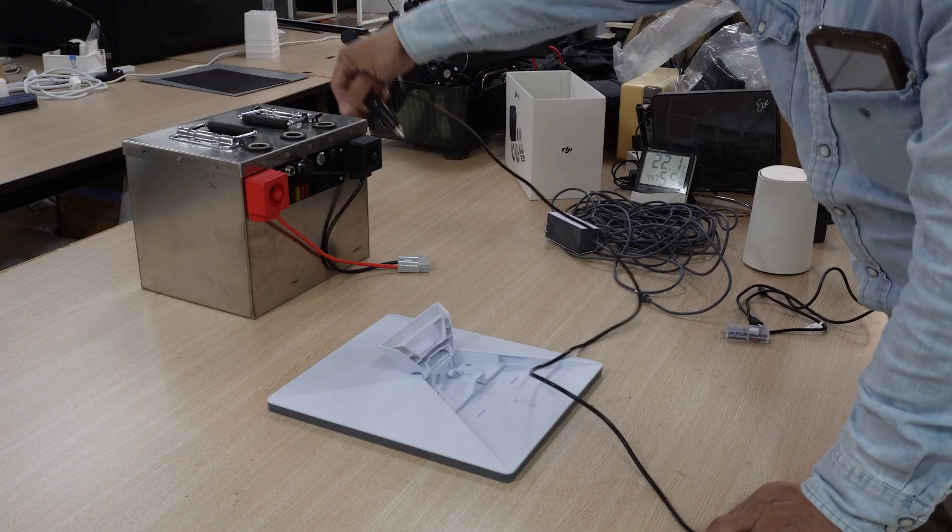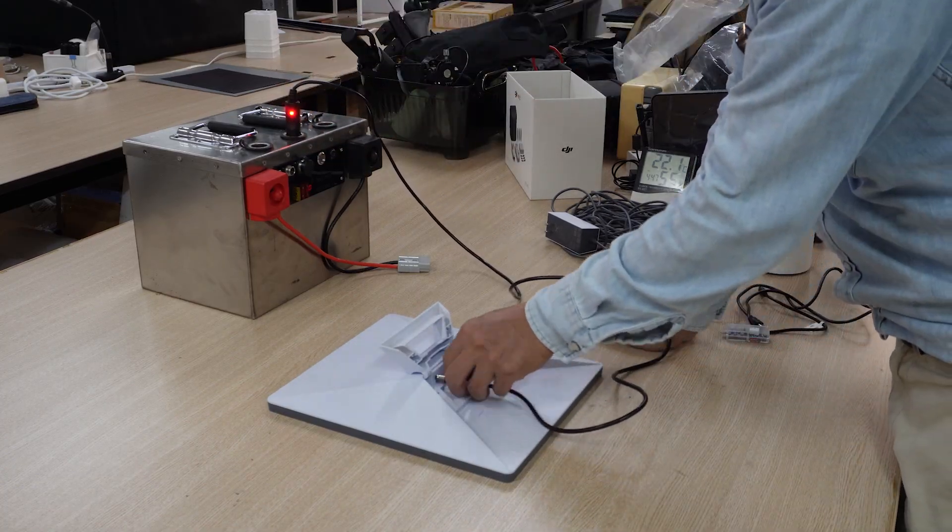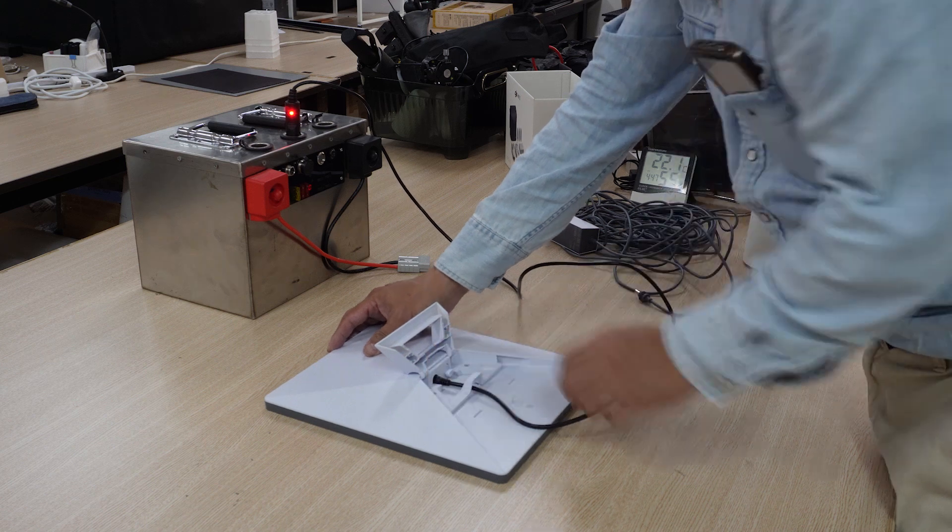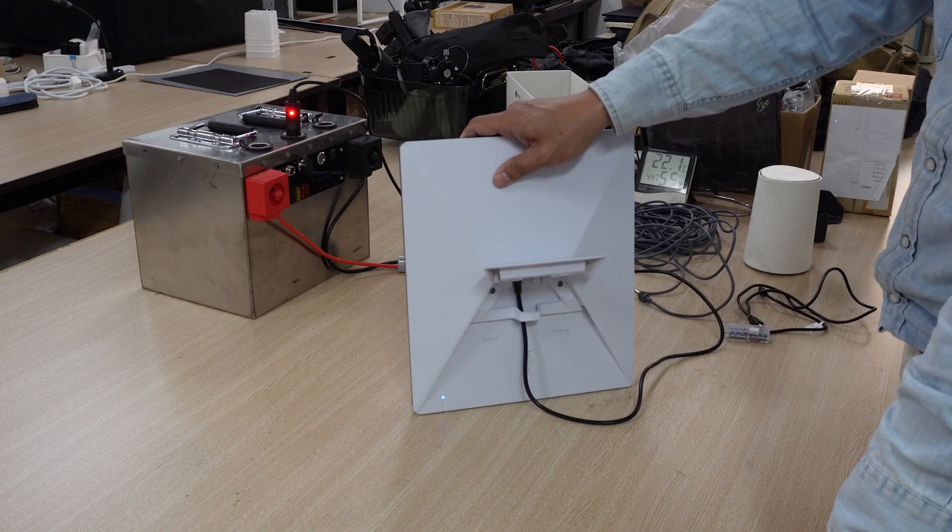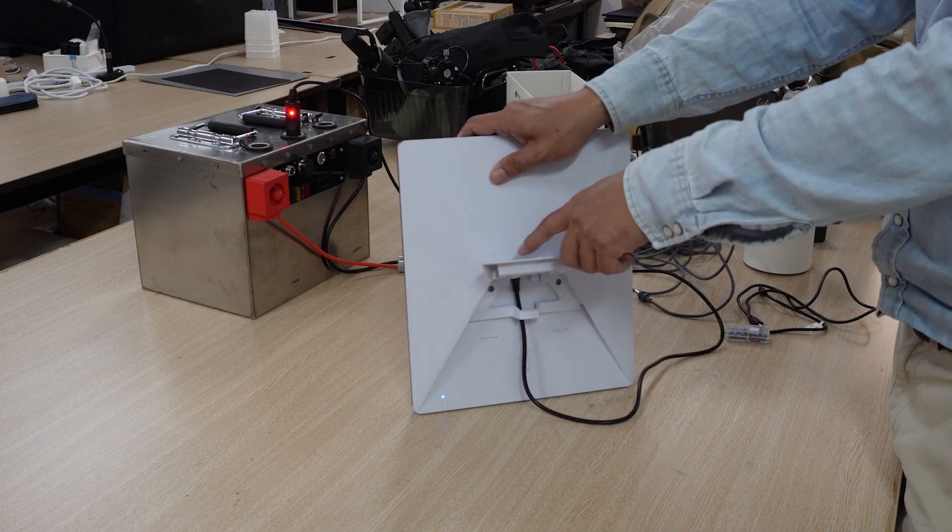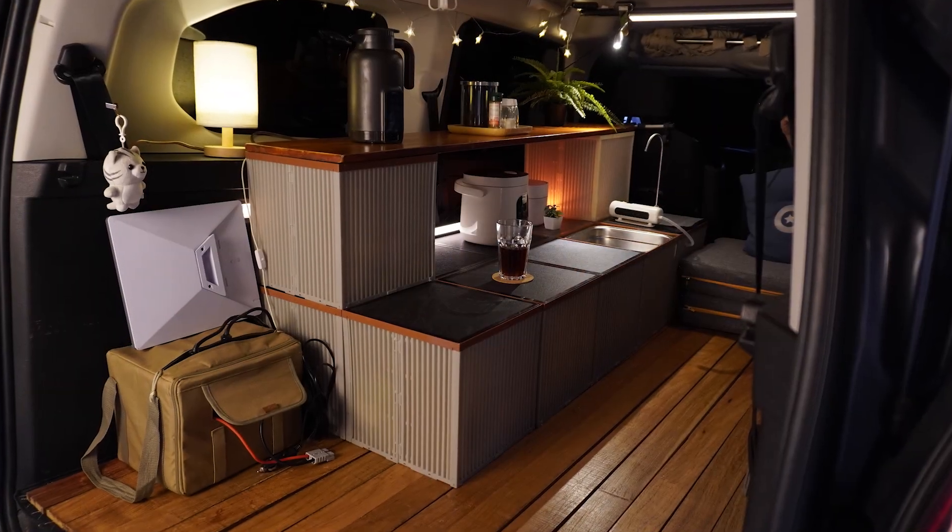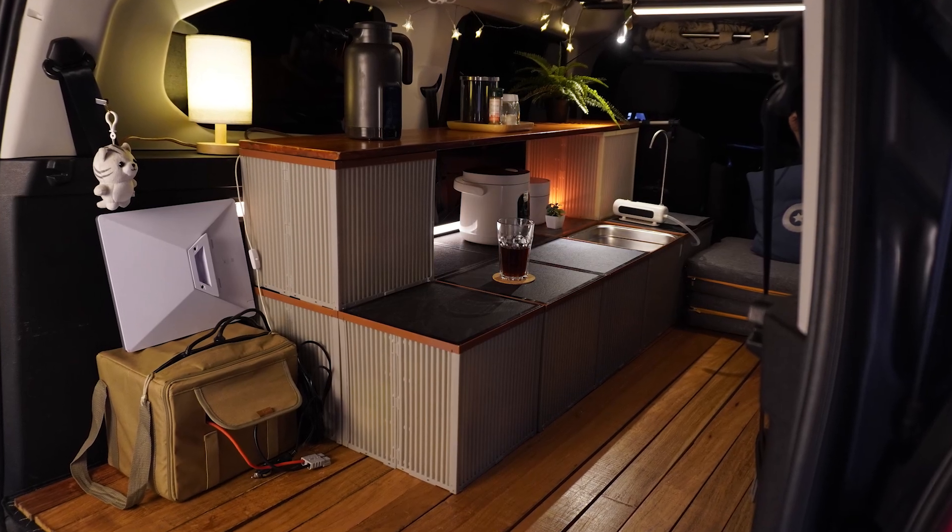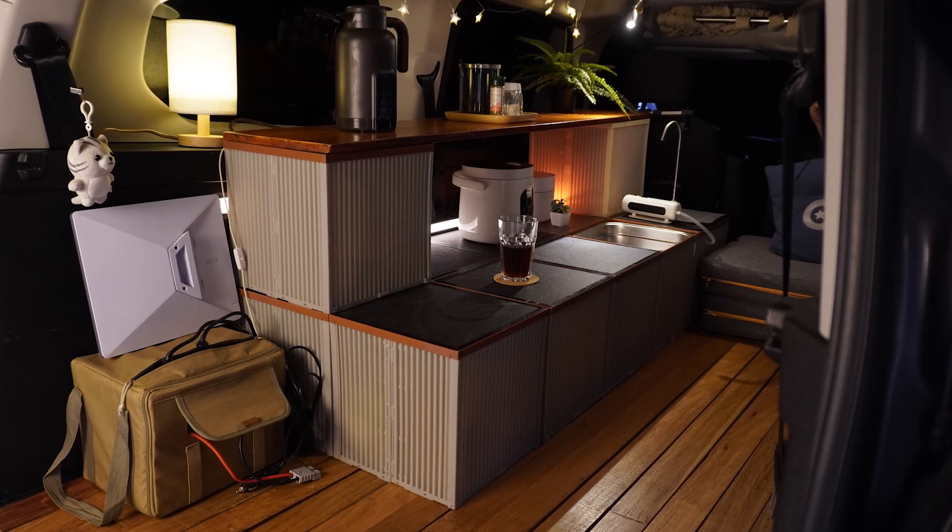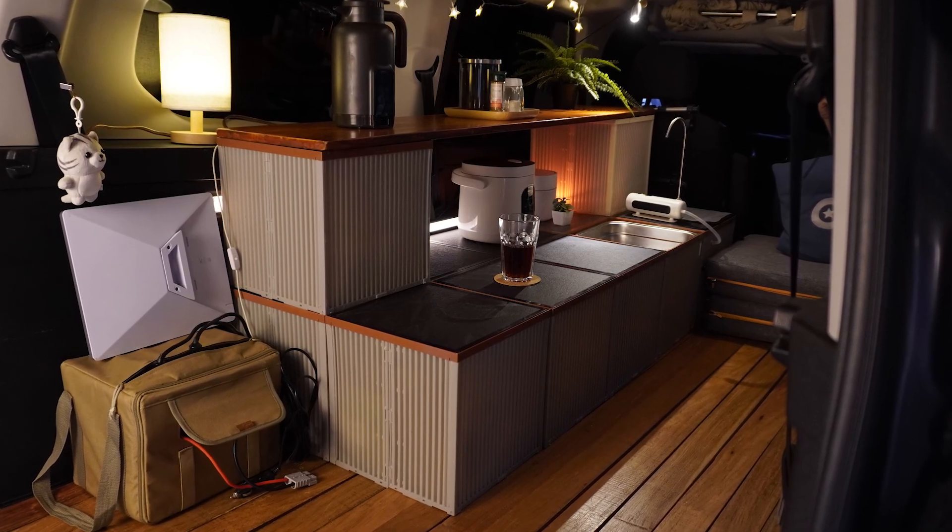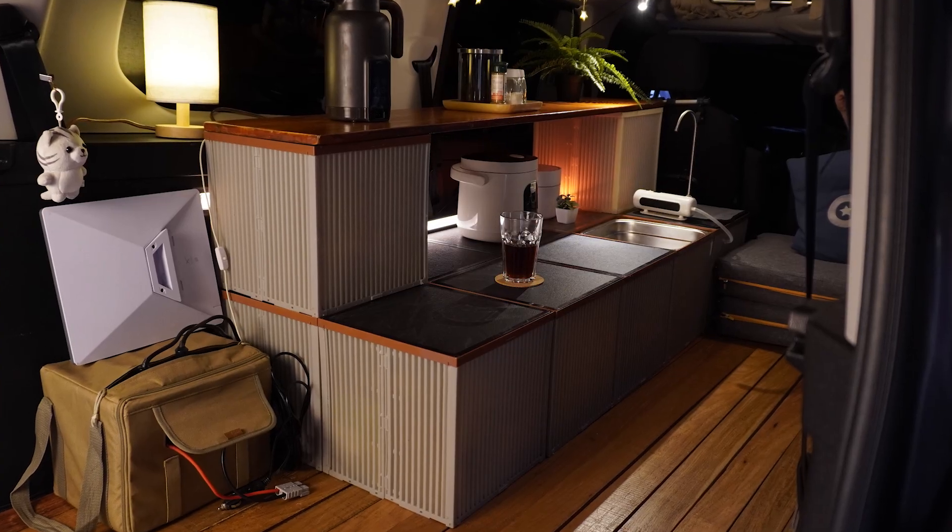For connectivity, I've chosen the Starlink Mini as the core communication and internet solution for van life. This device not only provides a stable Wi-Fi connection but also supports multiple devices at once, greatly enhancing overall convenience. Powered through the 24-volt output, it operates reliably without issue. Through careful system planning and integration of a wide range of equipment, I've achieved a power management setup that's efficient, stable and long-lasting in daily van life. This power system configuration has significantly elevated the overall quality of my mobile lifestyle.